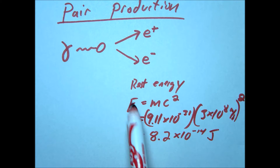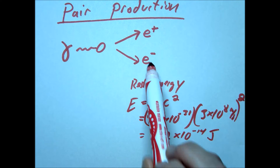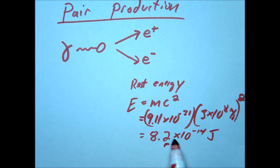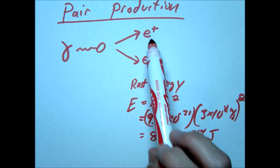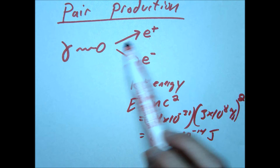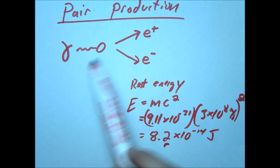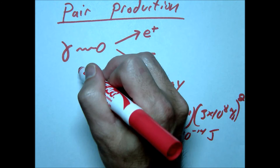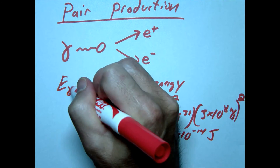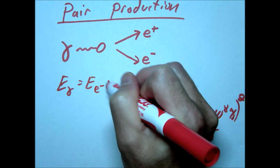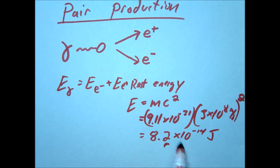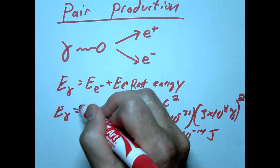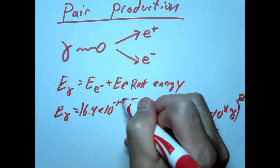So 8.2 times 10 to the negative 14 joules would be the rest energy of a positron and also of an electron, because they have the same exact mass. Now we're looking at the minimum energy for pair production to happen, so we assume these particles have a velocity of zero. The energy of our gamma ray needs to equal the energy of the electron plus the energy of the positron, and since these are both the same, it needs to be twice that — about 16.4 times 10 to the negative 14 joules.